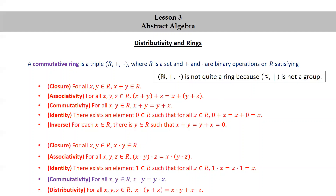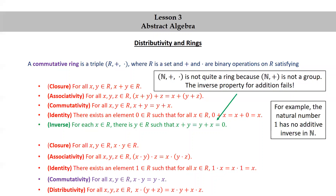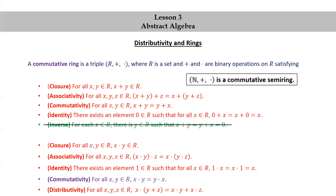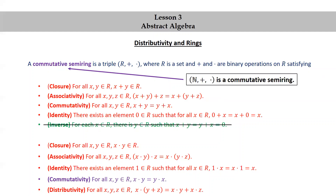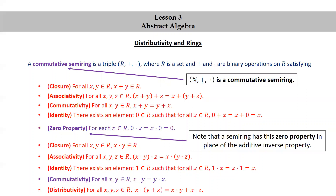The set of natural numbers together with addition and multiplication is not quite a ring because the natural numbers under addition do not form a group — the inverse property for addition fails. For example, the natural number 1 has no additive inverse in ℕ; the equation n + 1 = 0 has no solution in ℕ. Instead, ℕ together with addition and multiplication is known as a commutative semi-ring — satisfying all ring properties except the additive inverse property, with the zero property (0 × x = x × 0 = 0) included instead.